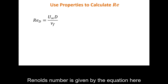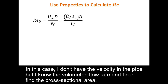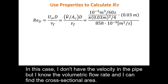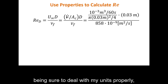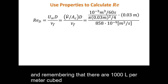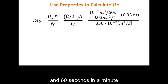The Reynolds number is given by the standard equation. I don't have the velocity directly, but I know the volumetric flow rate and can find the cross-sectional area. I plug that information into my calculator, being careful with units — remembering that 1 liter equals 1/1000 cubic meters, and there are 60 seconds per minute.